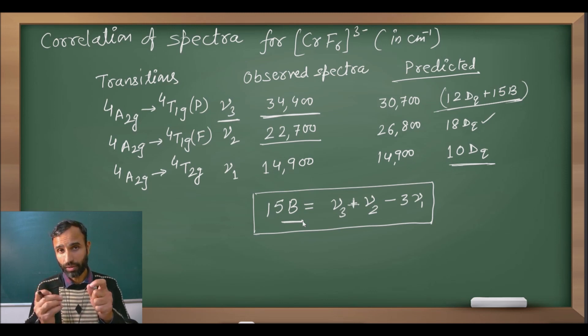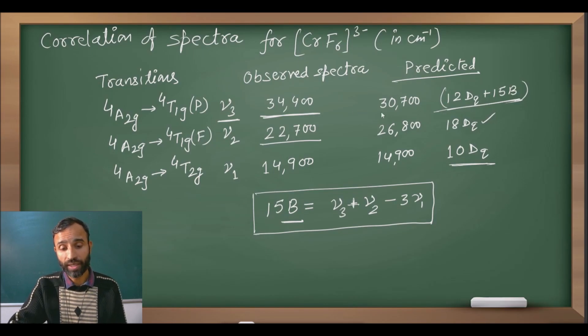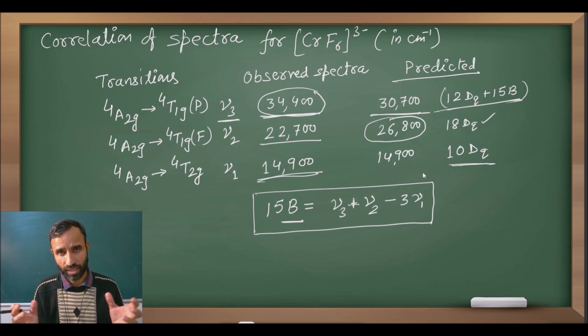But whenever two states with same symmetry are very close to each other, then there should be the bending of lines. They repel each other and therefore there is an increase in energy of the higher level and decrease in energy of the lower level, and this is the correction. So on correction, without correction the predicted value is 30,700 but the observed value is far away from it. Same is the case with nu 2. Predicted value is 26,800 but actual value is 22,700.